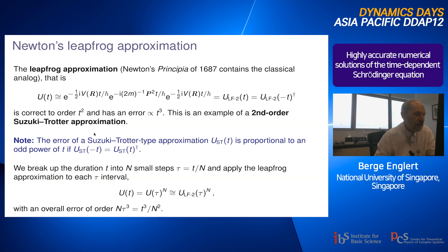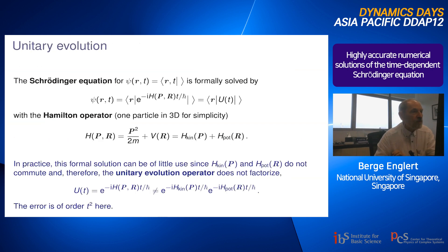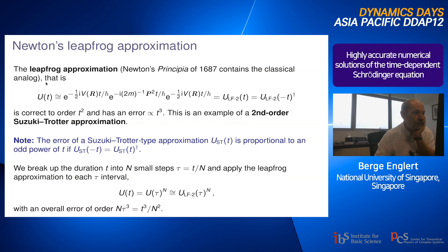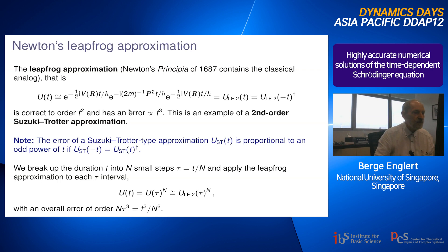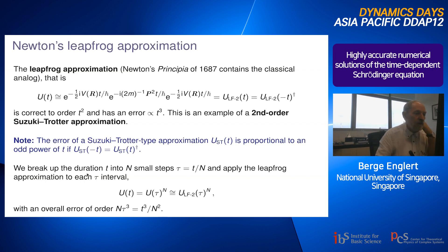Here we have an approximation similar to the previous slide except that we have broken up the potential energy term into two pieces, which removes the second-order error — now the error goes like t cubed. This is an example of a second-order Suzuki-Trotter approximation. We use this by breaking up the total duration T into n small steps each of length τ = T/n, then apply the leapfrog approximation to each τ interval, so U(T) becomes U(τ) to the power n.